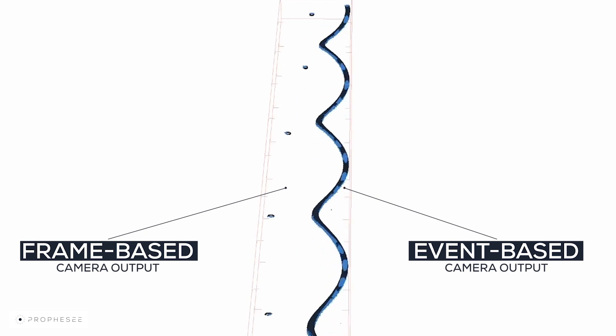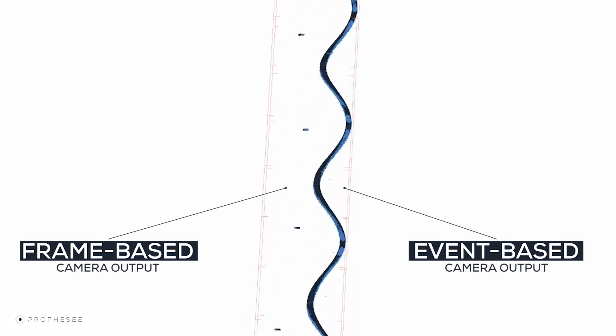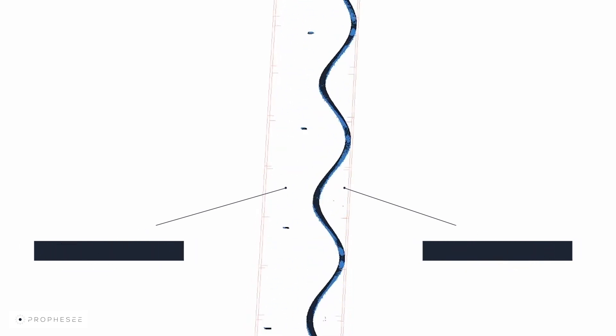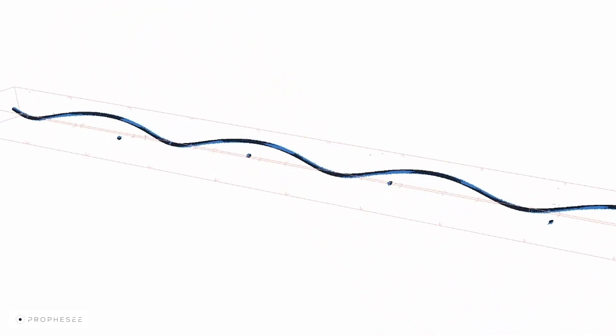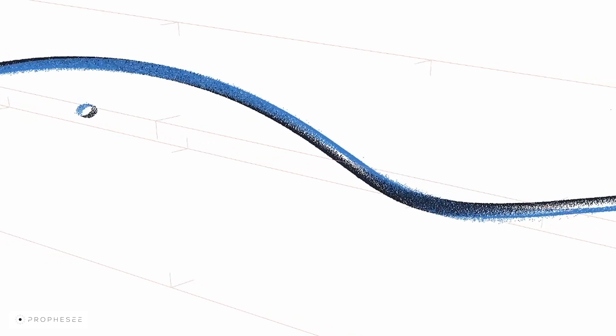The frame-based data are simulated as snapshots at a fixed frame rate. With this approach, it's not as easy to track the dot, as its position changes drastically between frames, and higher speeds increase this displacement between frames.